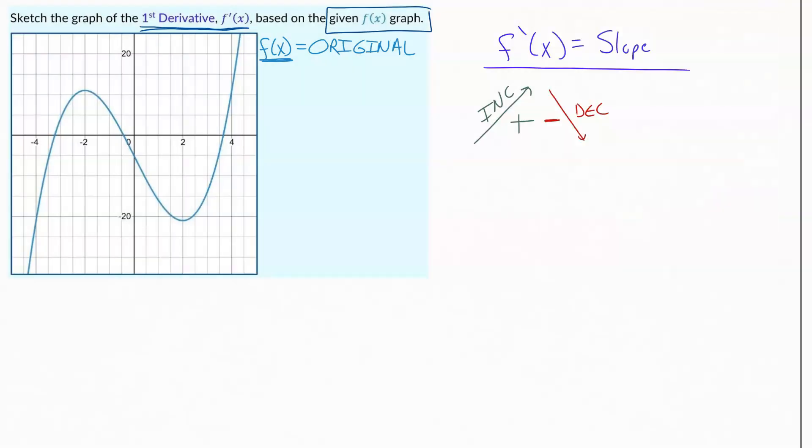And if your graph just goes horizontal for a second, that's going to be a zero slope and a zero derivative.